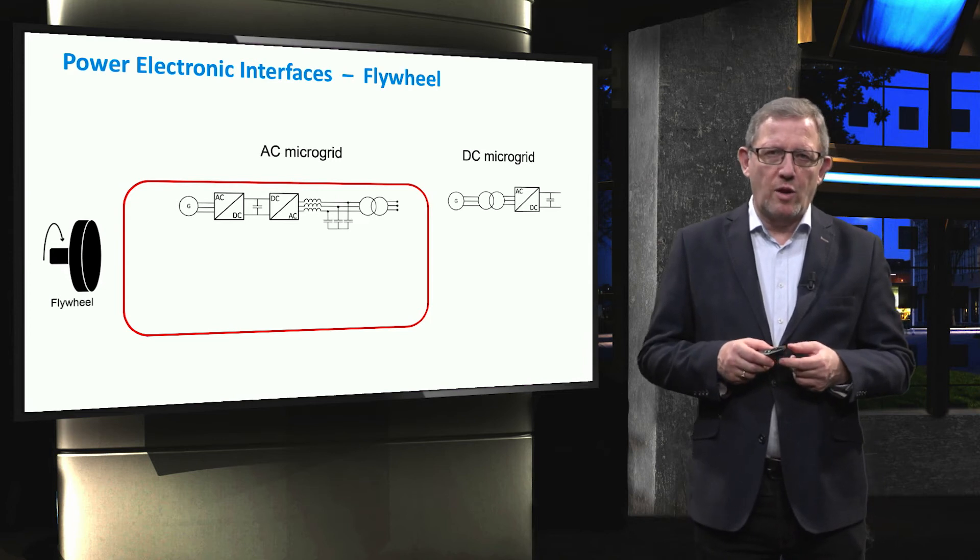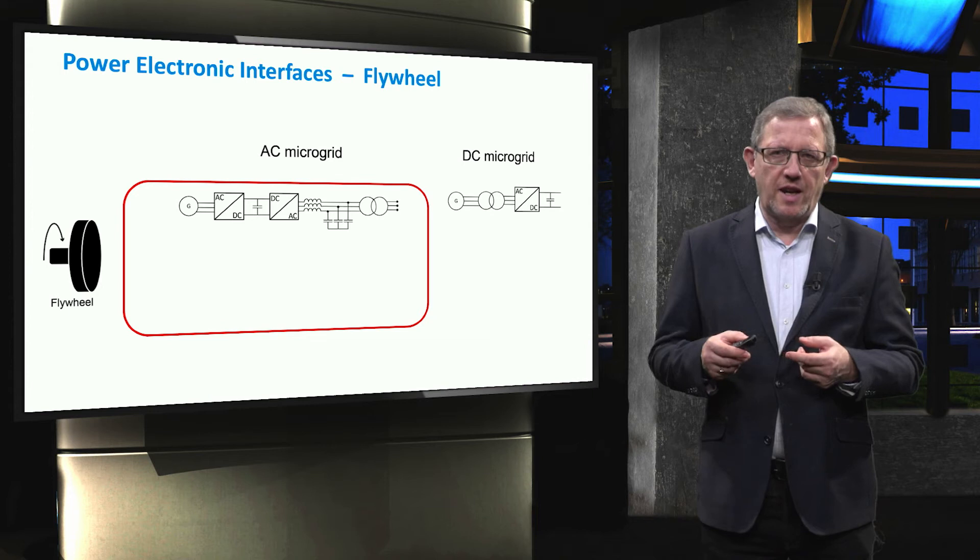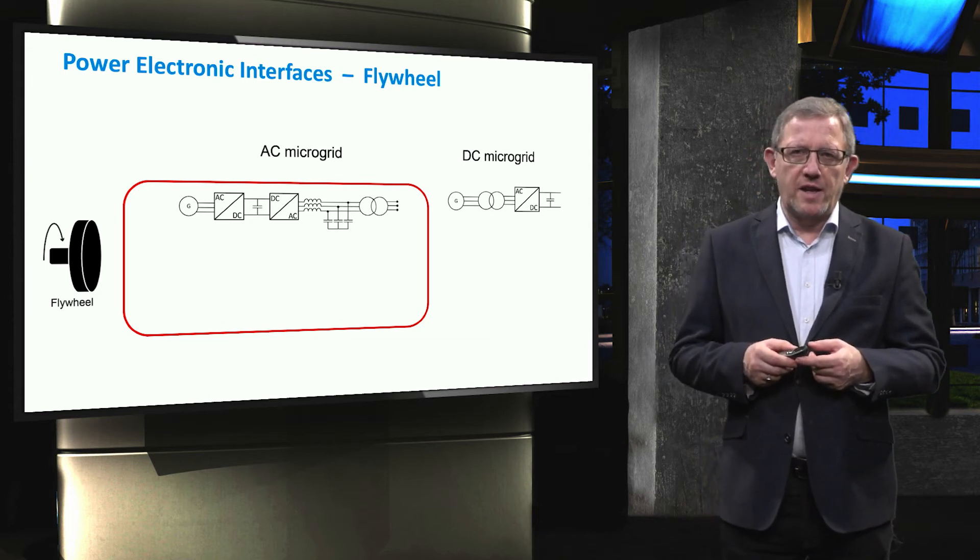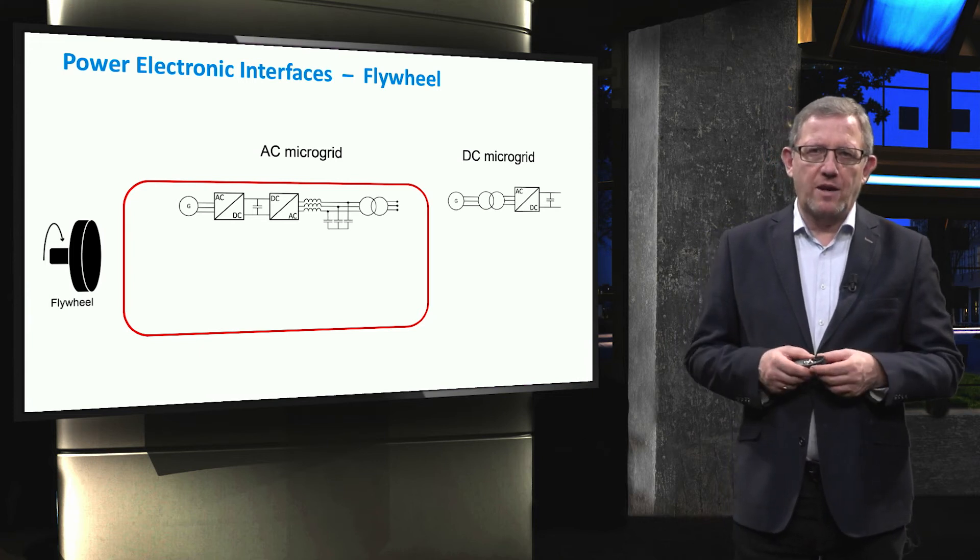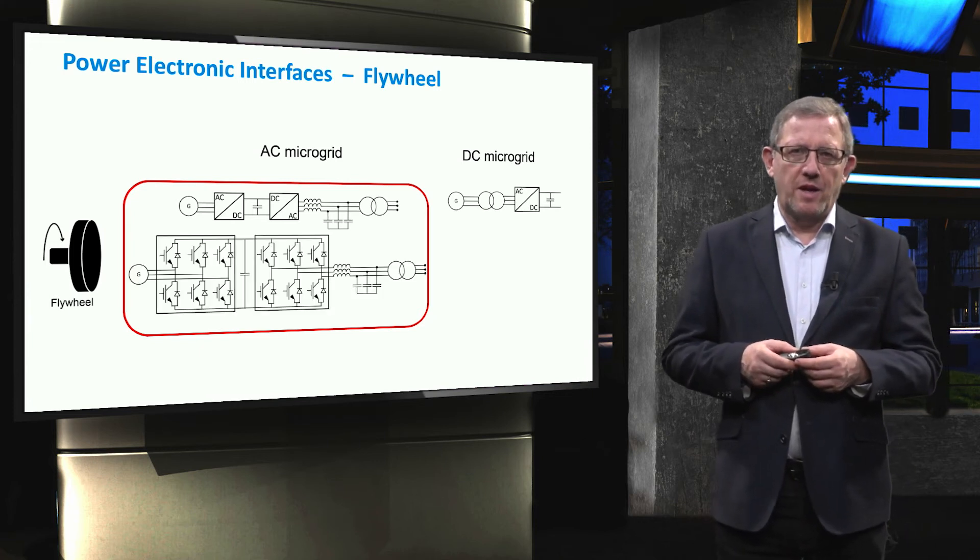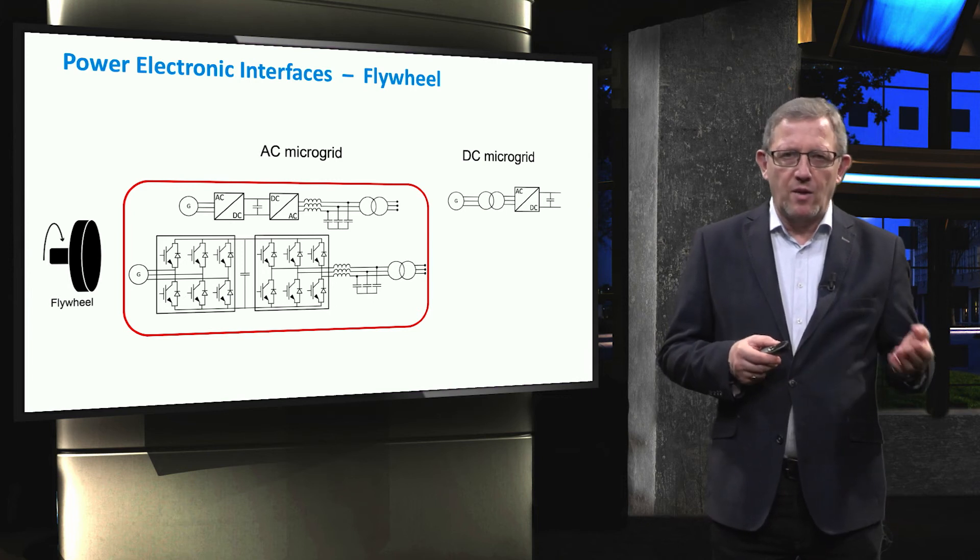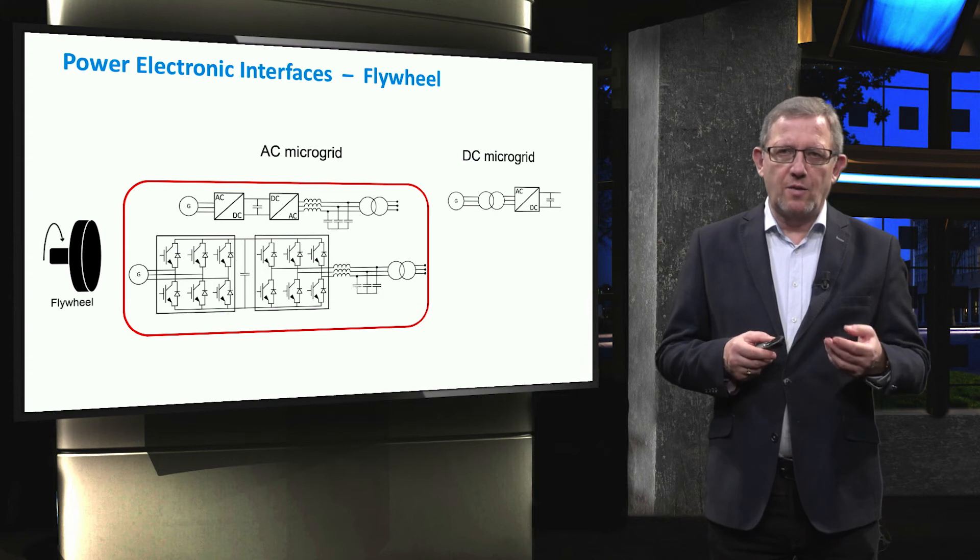Flywheels are one of the most promising storage technologies which store and release the kinetic energy of a rotor shaft. They can be effectively integrated into the AC microgrids through a full-scale back-to-back converter. Typically, one converter is responsible for regulating the DC-link voltage and reactive power, while another converter controls the active power and the grid's voltage.